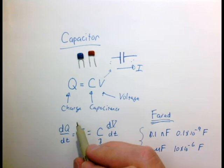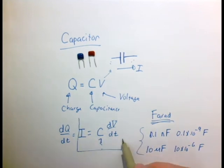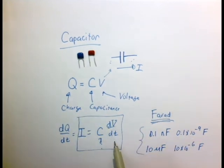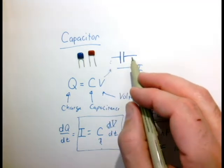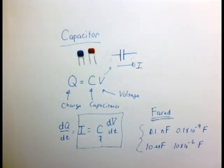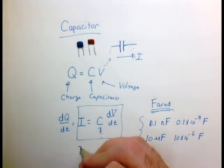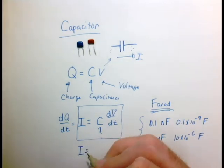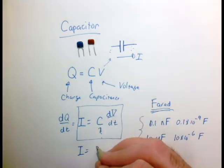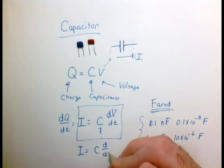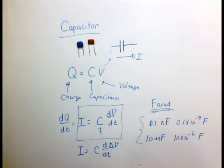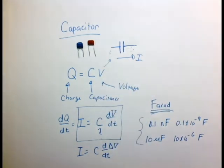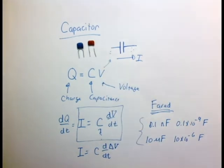So the law we'll use is that the current is proportional to the time rate of change of the voltage — specifically, the voltage across the capacitor: I = C·d(ΔV)/dt. Now let's construct a simple circuit using a resistor and a capacitor.